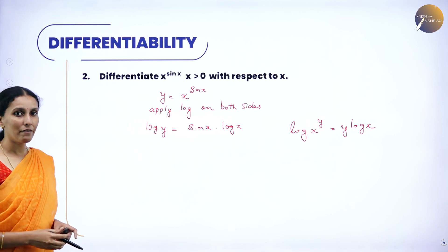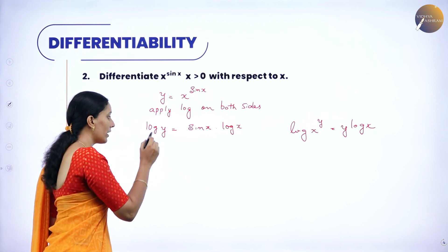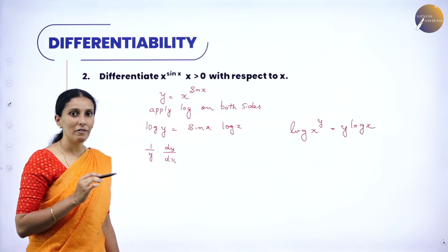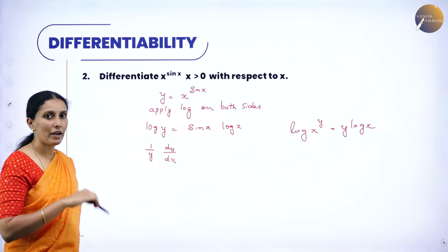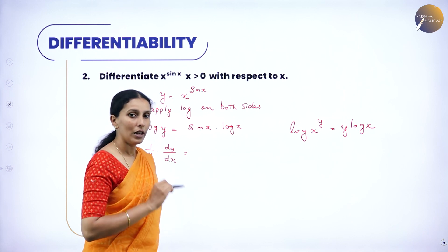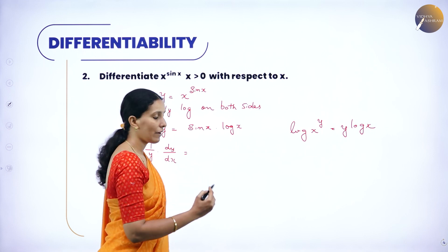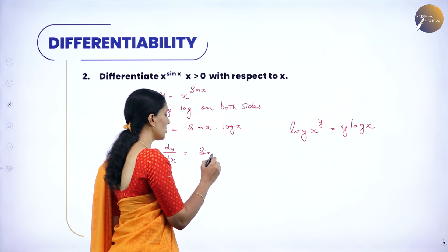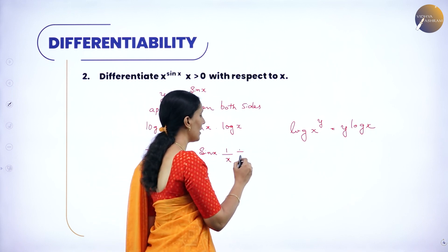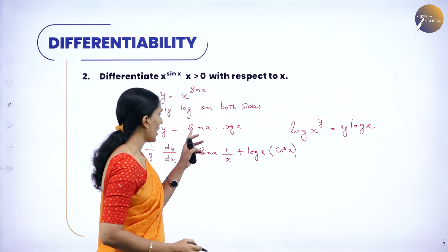Now let us differentiate both sides. Differentiation of log y is 1 by y, and since you are differentiating y you have to write dy by dx. Now we have two functions: sin and log. Use the product rule: first function into derivative of second, plus second function into derivative of first. So it becomes: sin x into 1 by x, plus log x into cos x. So sin x derivative is cos x.